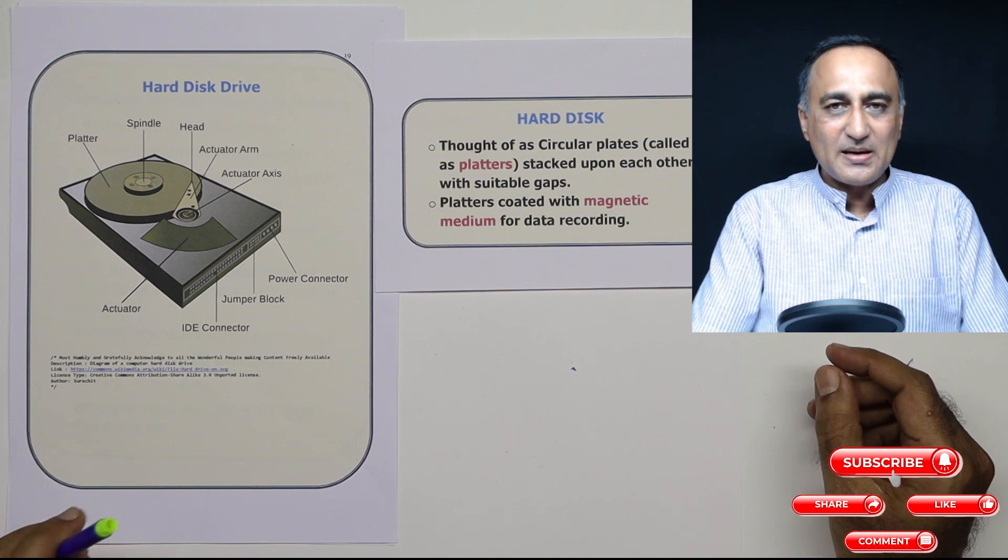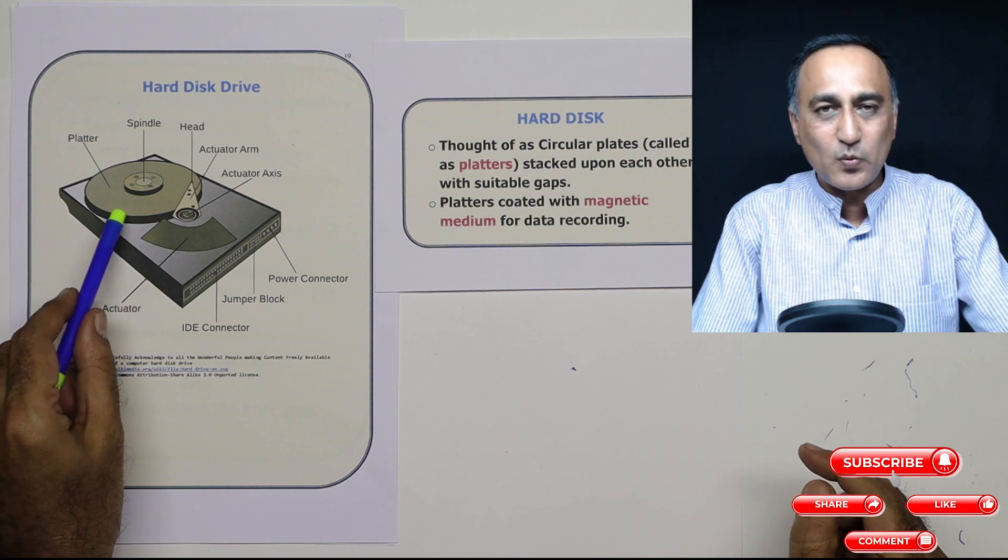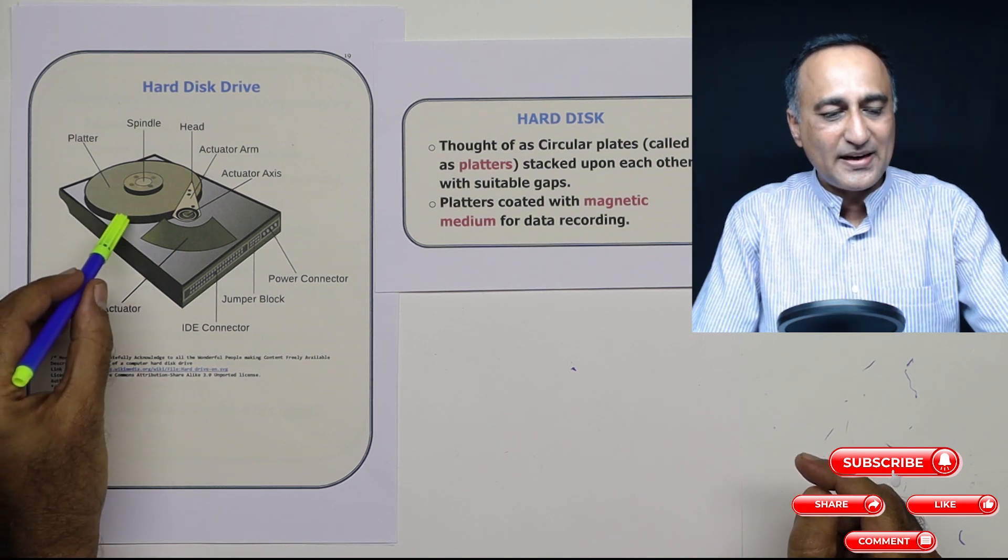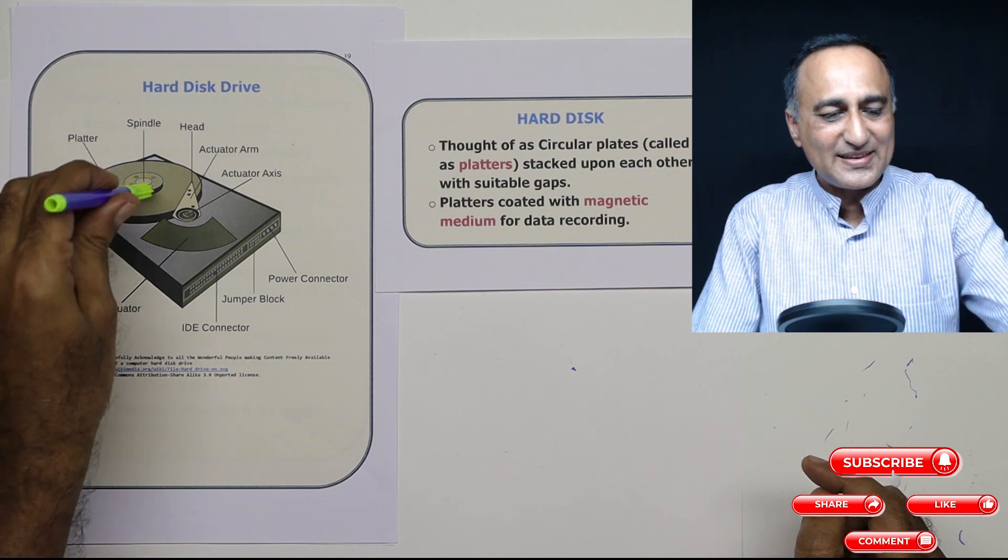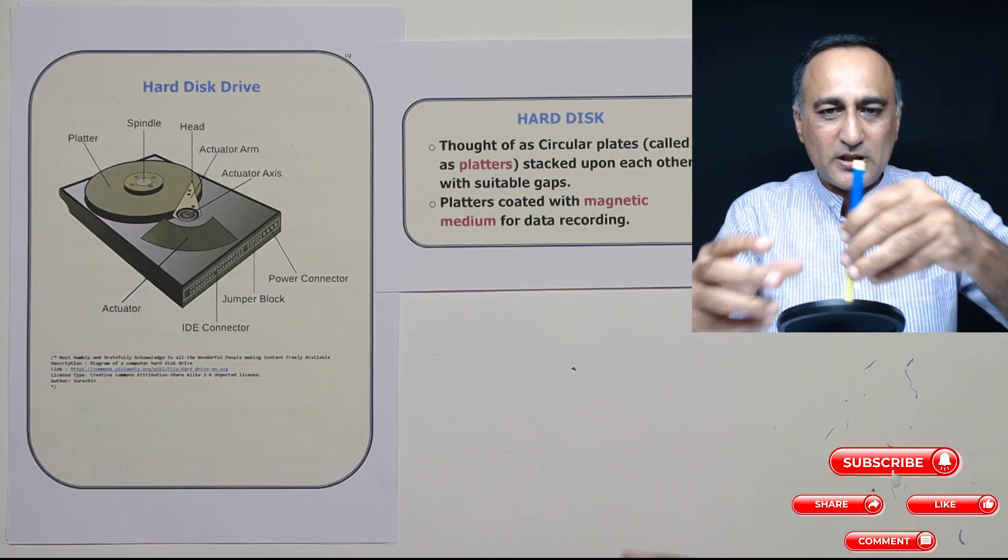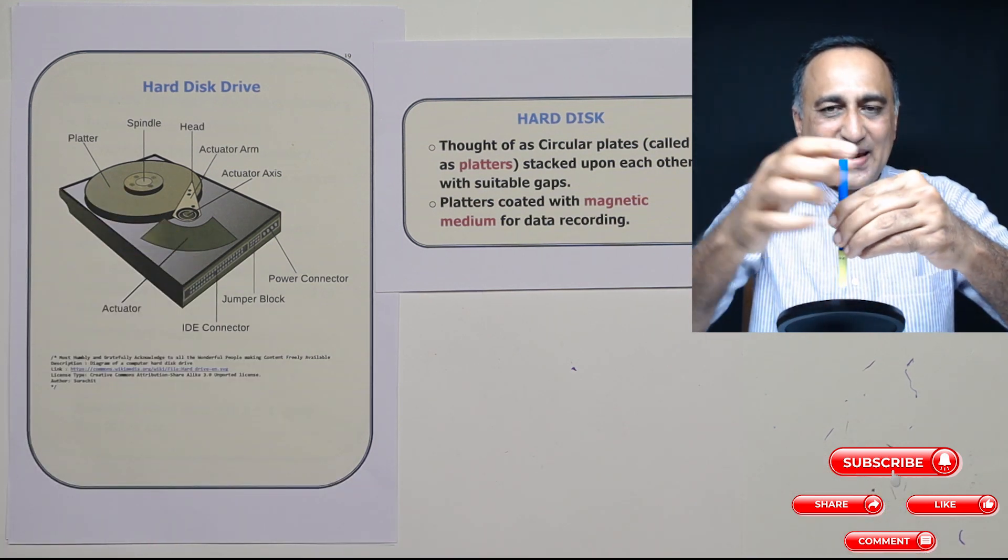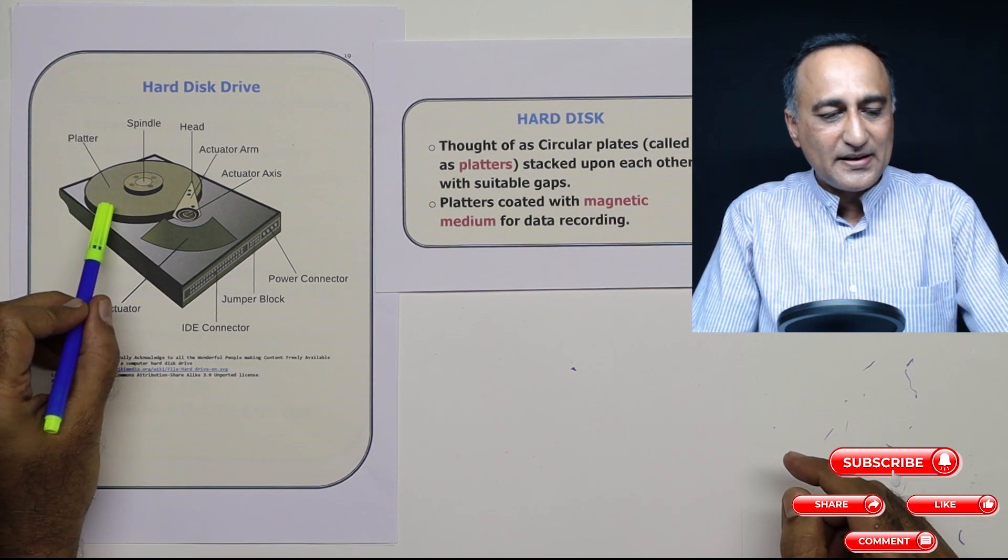Hard disk can be thought of as a series of circular plates. This is an example of one plate. So you can have 8, 10, 12 plates. At the center, there is a spindle. Because of this spindle, all the plates are held in one place and the plates rotate around this particular spindle. This plate is coated with magnetic media both on the top and lower side of the plate.